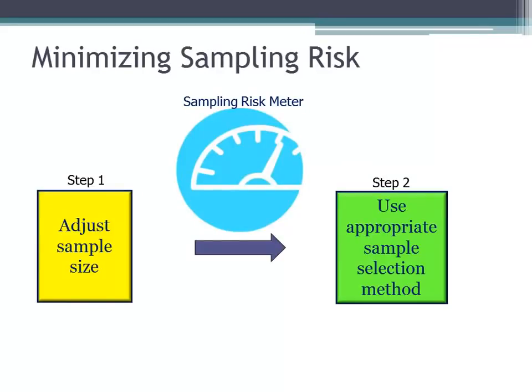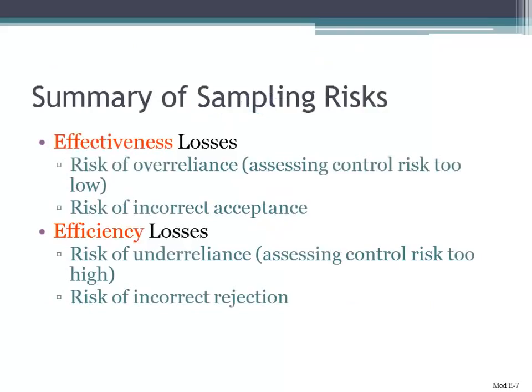In order to minimize sampling risk, you can adjust your sample size. The more items you look at — if you planned your sample approach appropriately and effectively — that should help reduce and minimize your risk. You should also use the appropriate sample selection method. Statistical sampling is going to minimize your risk versus non-statistical sampling. So to minimize sampling risk: adjust your sample size and use the appropriate sample selection method.